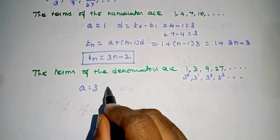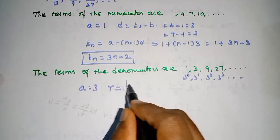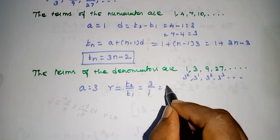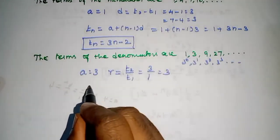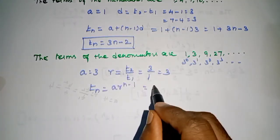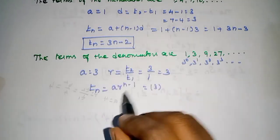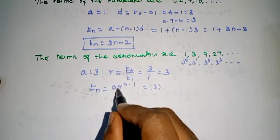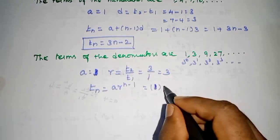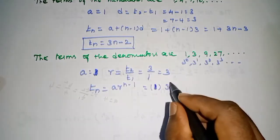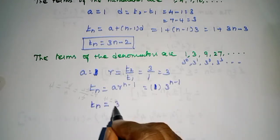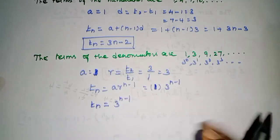For the GP of denominators, a = 1 (since 3^0 = 1) and common ratio r = t2/t1 = 3/1 = 3. The GP nth term is Tn = a·r^(n-1) = 1 × 3^(n-1). So the nth term of the denominator is 3^(n-1).